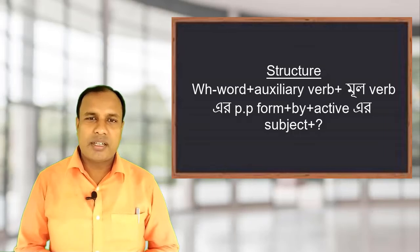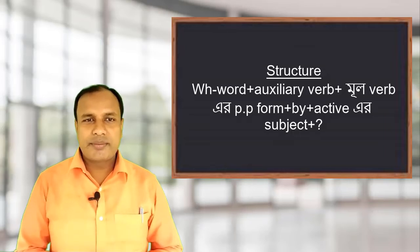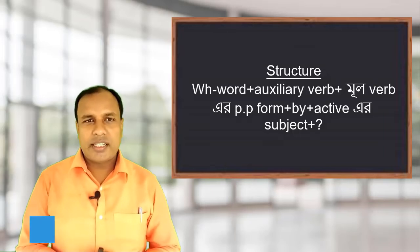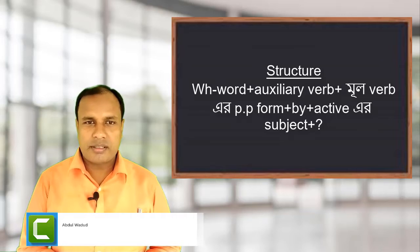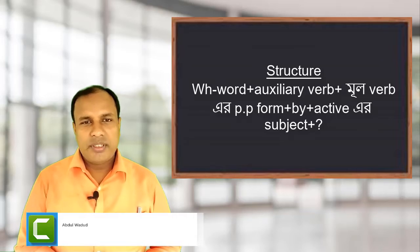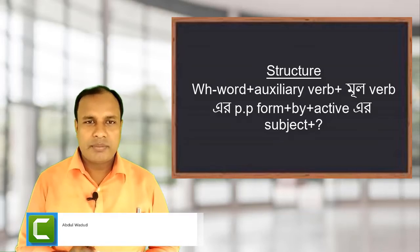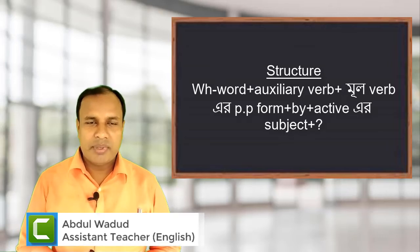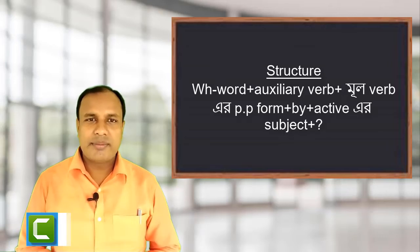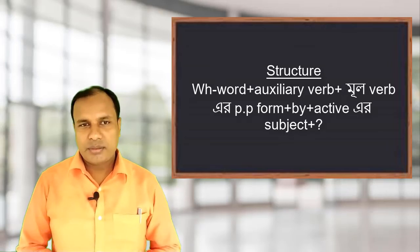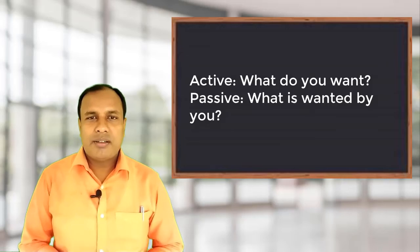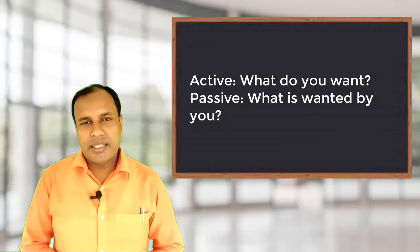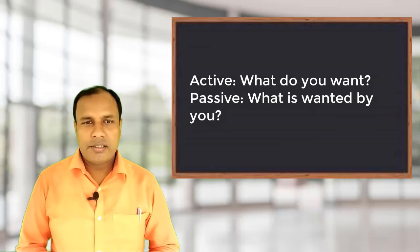The structure of the interrogative sentence with a WH-word is: WH-word plus auxiliary verb plus main verb past participle form plus 'by' plus active subject. For example: 'What do you want?' Passive becomes: 'What is wanted by you?'